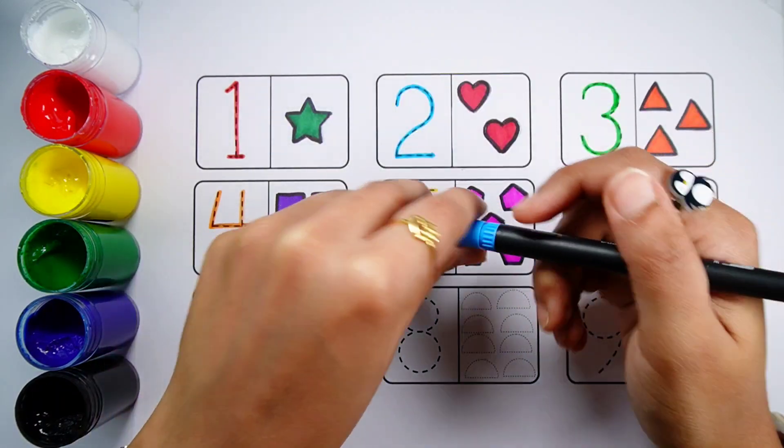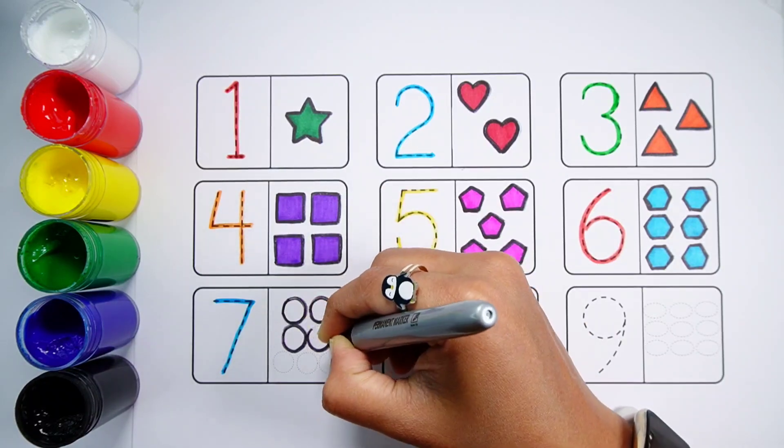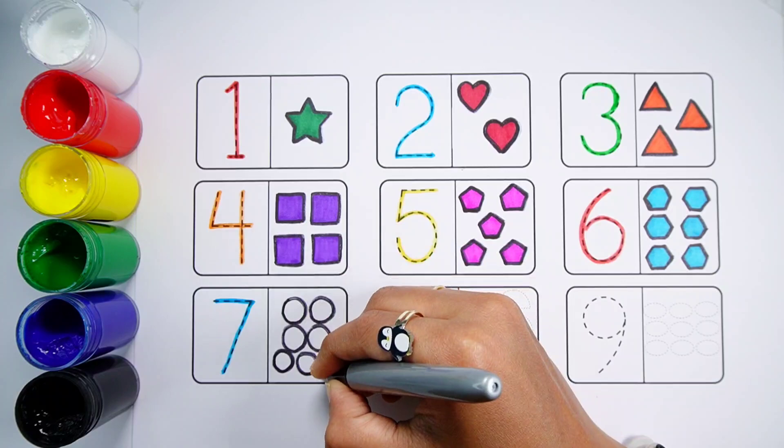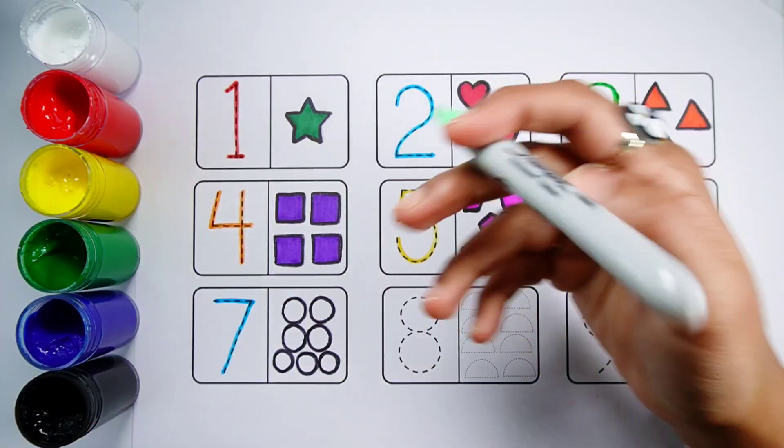Number 7. One, Two, Three, Four, Five, Six, Seven. Seven Circles. Pale Green Color.